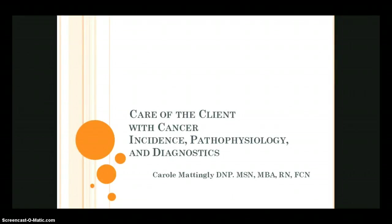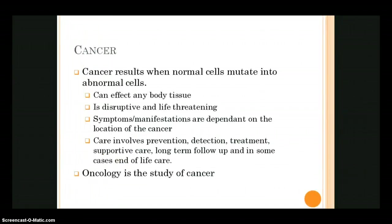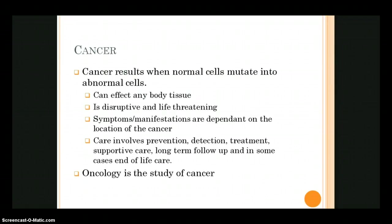This first slide talks about the definition of cancer. Cancer is now considered to be a chronic disease with acute episodes, and the basis of cancer is simply that we have normal cells that mutate into abnormal cells and then they continue to proliferate. Cancer itself is a group of more than 200 different diseases, characterized by uncontrolled and unregulated growth of cells.